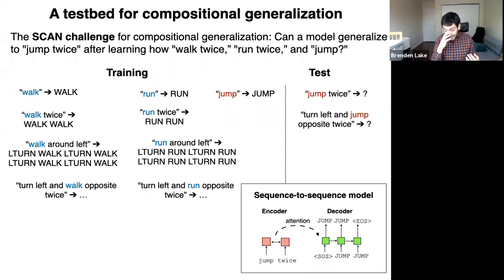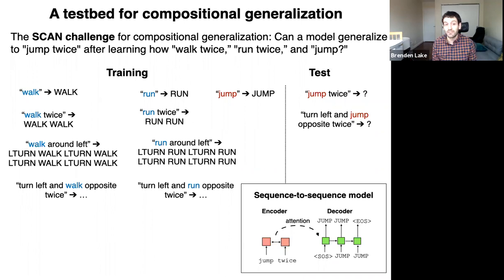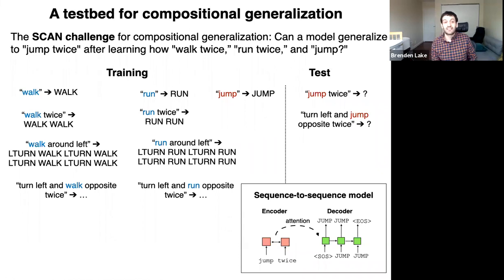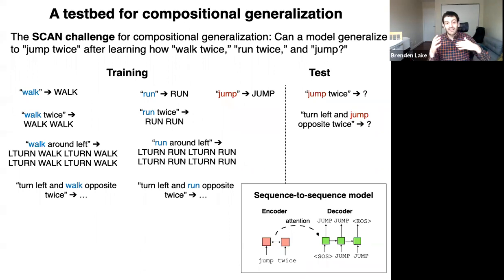Say you train a neural network to follow some basic commands — if you give it the instruction 'walk,' it maps to the walk action primitive. If you're asked to walk twice, the system should walk, walk. If it's asked to walk around to the left, it requires a sequence of eight actions: it has to make a left turn and then walk, repeating until it does a 360 while walking. So you can see it uses 'walk' in all these different compositional ways.